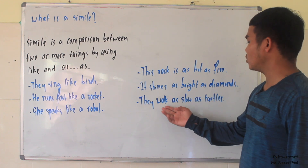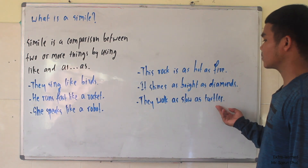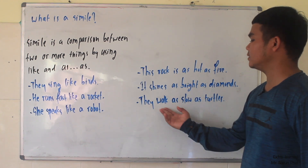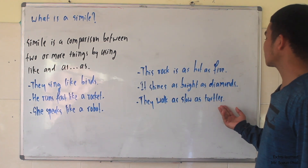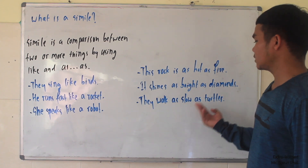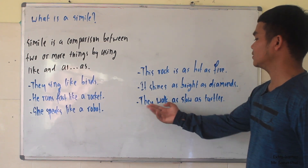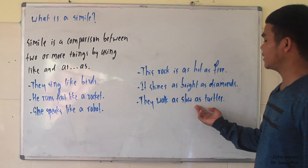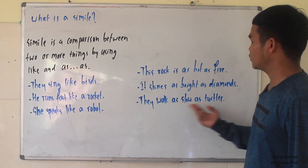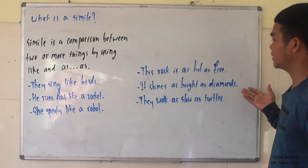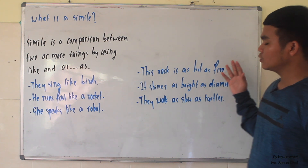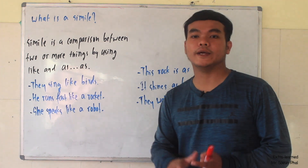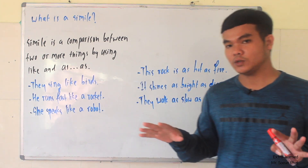And another example: 'They walk as slow as turtles.' They compare between how they walk and turtles. That means they walk very slowly, that's why they say 'they walk as slow as turtles.' So they're using 'as-as' to compare between these two things.